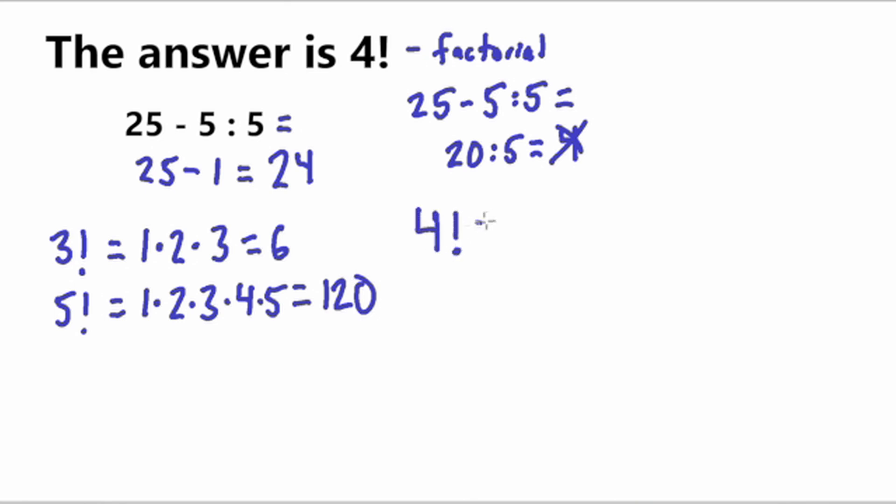So 4 factorial is equal to, remember all the numbers from 1 to 4 multiplied together, 1 times 2 times 3 times 4. And if this statement, the answer is 4 factorial is correct, then 4 factorial would have to be 24, because the answer to this problem as we got correctly is 24. So let's just make sure that it is. Let's check it.